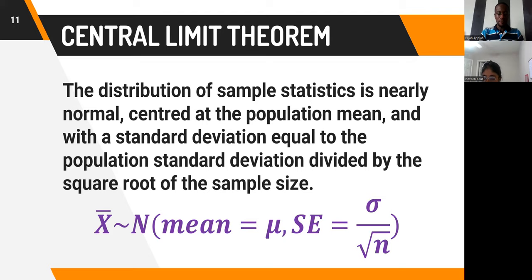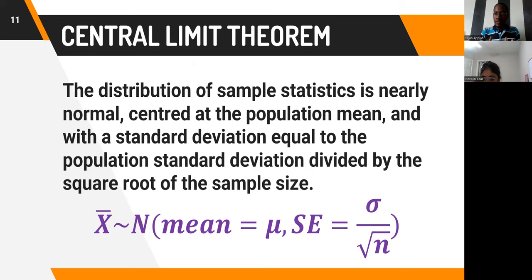We looked at various distributions of data assumed to be a population: a normal distribution, a uniform distribution, an exponential distribution yielding a right-skewed distribution, and a beta distribution yielding a left-skewed distribution. From any of these, by calculating the distribution of the sample means, that distribution was nearly normally distributed. The mean of the sampling distribution was approximately equal to the population mean, and the standard error was the population standard deviation divided by the square root of the sample size.